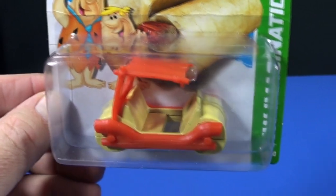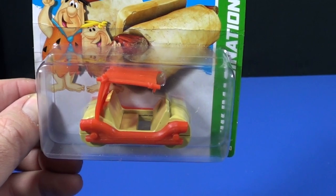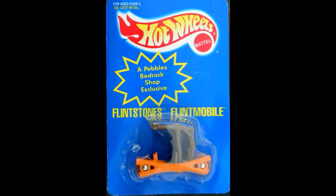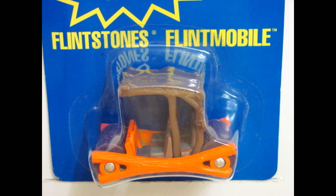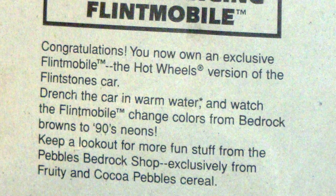Now this is not the first Hot Wheels Flintmobile. They actually had one in 1994. It was a 1994 promotion. This is before my time, I started collecting in 1998. Apparently you could buy some Fruity and Cocoa Pebbles and send in for this mail-in 1994, and you get a Flintstones Flintmobile. As you can read on the back of the package, it says that you can change the color from bedrock brown to 90s neon.